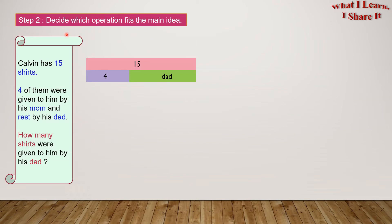Step 2: Decide which operation fits the main idea. So by operation I mean like addition, subtraction, multiplication, division. So what will fit here? To find the missing part we use subtraction.